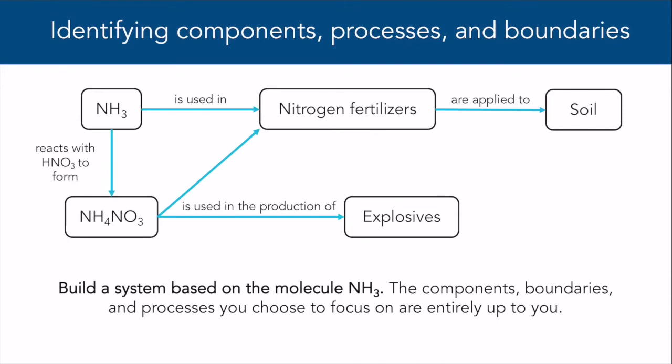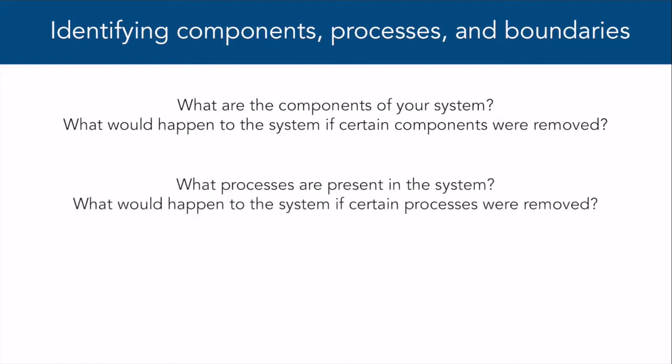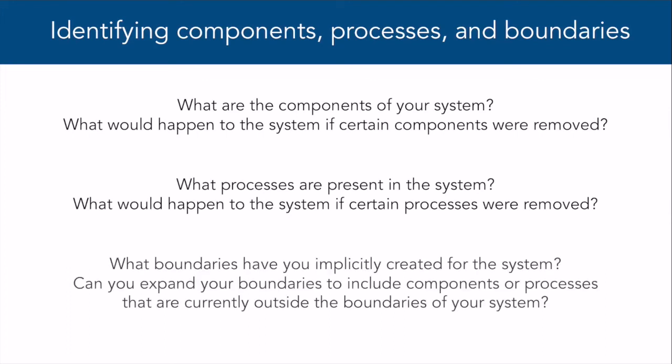Awesome! Now that you have your system created, I'm going to ask you some questions to help you think more deeply about specific parts of your system. Feel free to pause the video between these questions if you need more time to think. What are the components of your system? What would happen to the system if certain components were removed? What processes are present in the system? And what would happen to the system if certain processes were removed? What boundaries have you implicitly created for the system? Can you expand your boundaries any further to include components or processes that are currently outside the boundaries of your system?